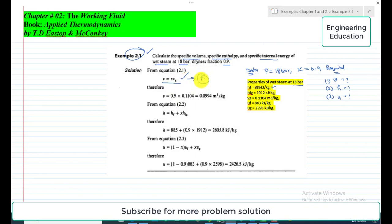which is expression A, it will become v = 0.9 × 0.1104. So if we simplify this, we get 0.0994 cubic meters per kilogram.